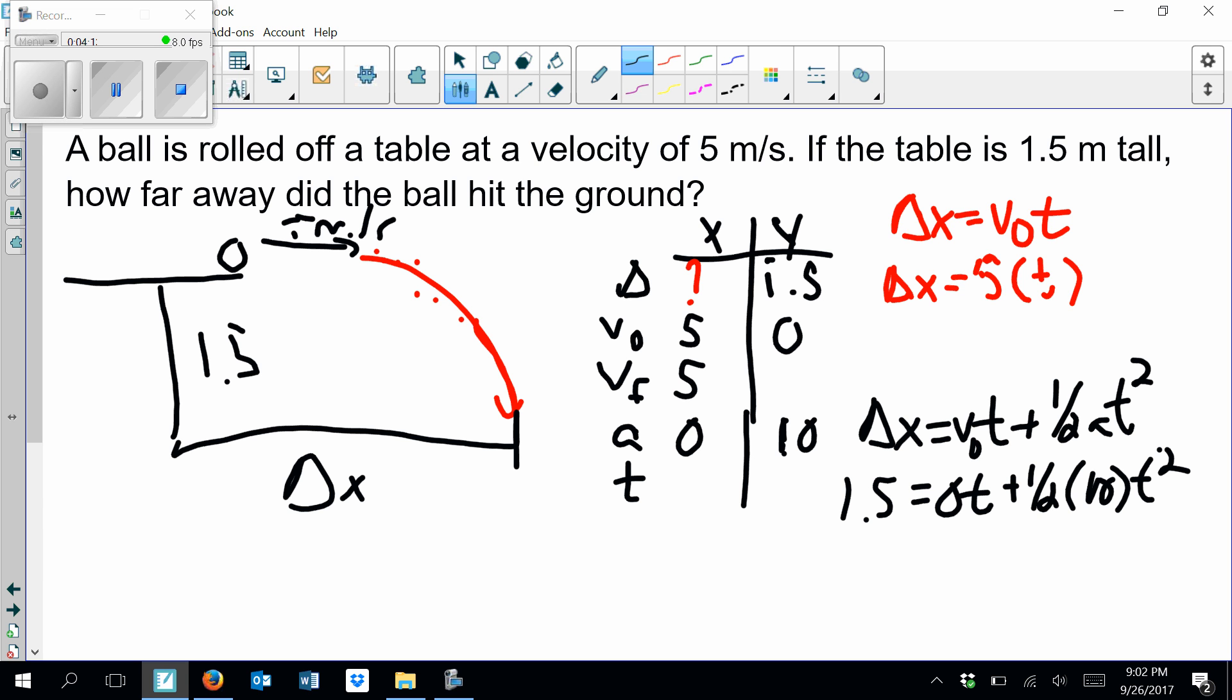So if I multiply by 2 and divide by 10, I'm going to get 0.3. And that equals t². And I need to go ahead and get the square root of 0.3.